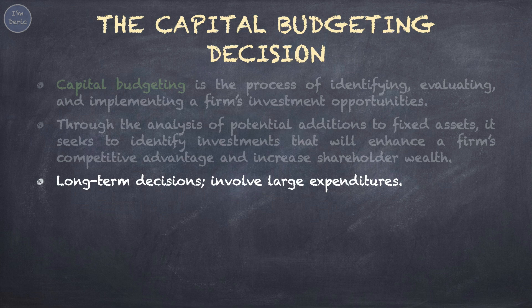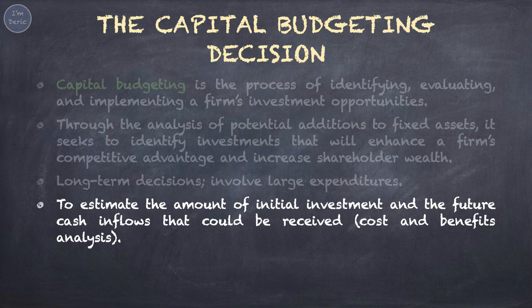Capital budgeting deals with long-term decisions which involve large expenditures. For committing a large sum of spending, the company has to be very cautious. For the calculation, there are two parts we are going to deal with. First, we have to estimate the amount of initial investment. Second, the future cash inflows that could be received. That's what we call cost and benefits analysis.